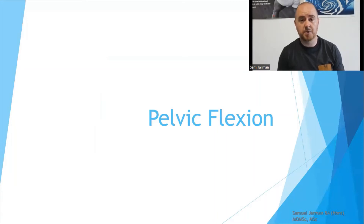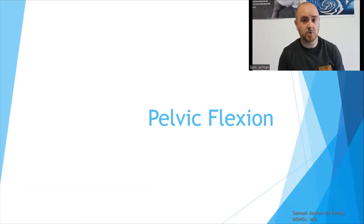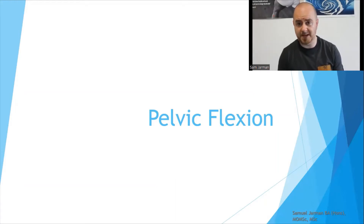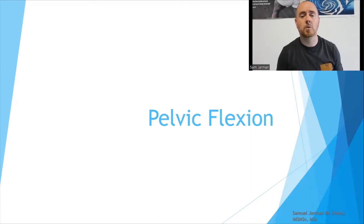Continuing on with our project where we're discussing anatomy — specific anatomical regions — but more so with the central portion of our meaning network or semantic network being particular motions. We're going to look at pelvic flexion.